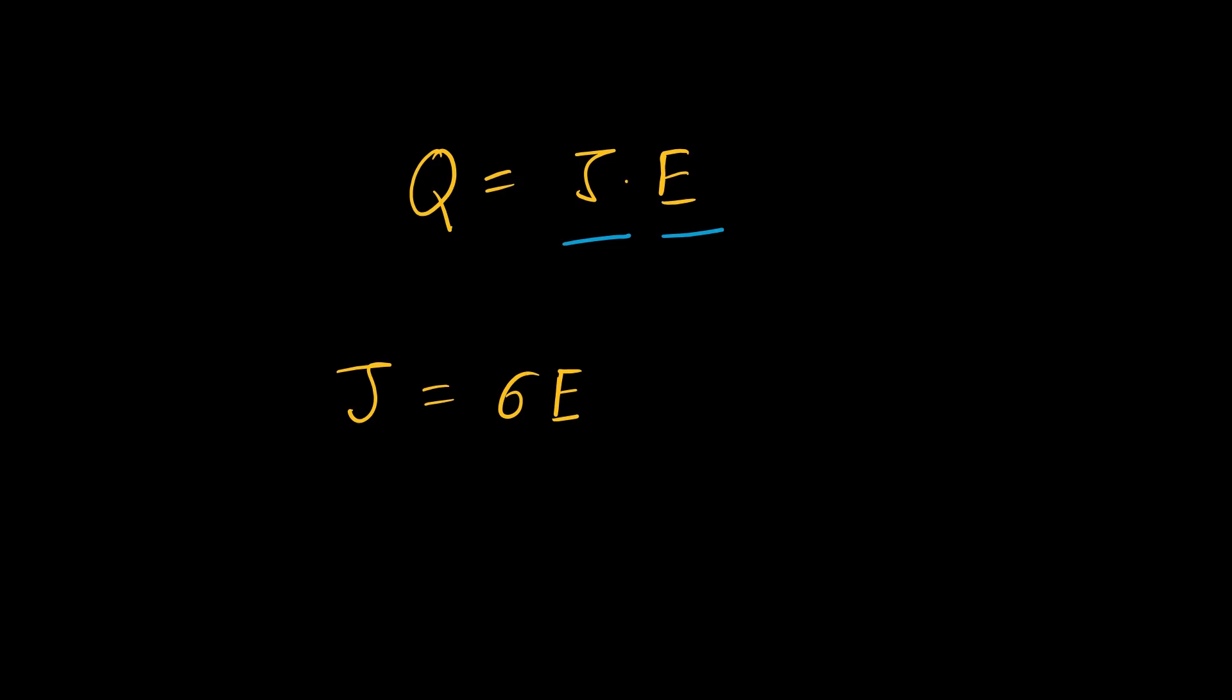If we substitute this into the power equation, we will get Q = σE² or you can modify the expression to write this as J²/σ. This means that heat generation is proportional to the square of the current density and inversely proportional to the electrical conductivity.